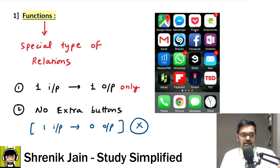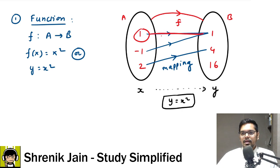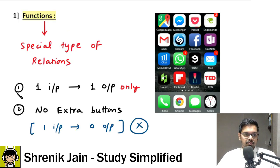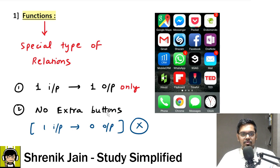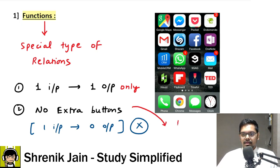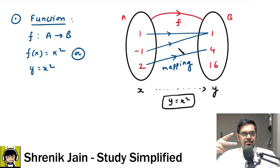You can also verify the two properties of a function here. One input leads to one output — you won't find input 1 linked to both 1 and 4. Every input is linked to some output — no extra unlinked elements exist. Both properties are satisfied, so this qualifies as a function. Two properties must be followed for a relation to be called a function.